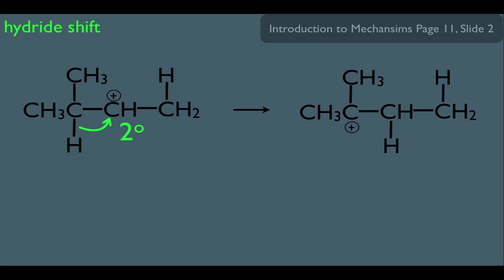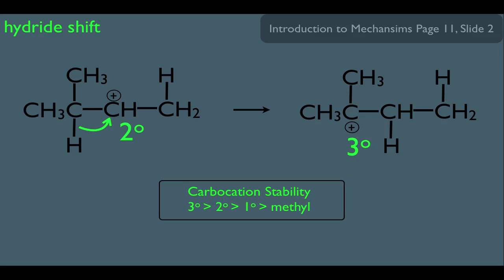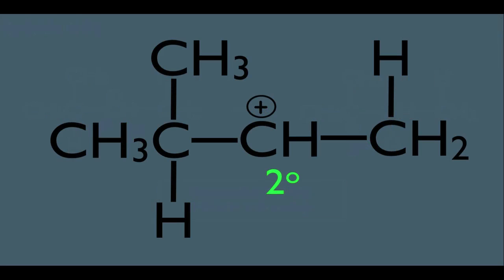Notice that the carbocation after the shift is a tertiary carbocation — it has three carbons directly bonded to it. We learned in a previous lecture about carbocation stability: tertiary carbocations are more stable than secondary. Which means the move shown here has an incentive for happening, and it will happen.